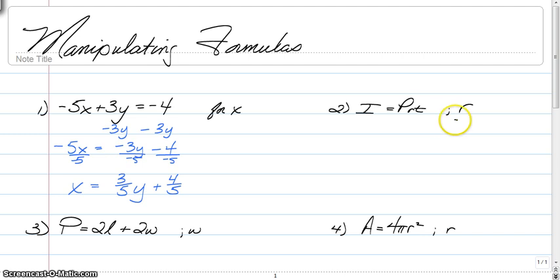This is the same thing. I = Prt, we want to solve for r. That means we're going to get r by itself. To get rid of the p and t on the right side, we have to divide both sides by p and t. You can do this all at the same time because these p's and t's will both cancel, and you're left with r = I/pt. It's as simple as that.